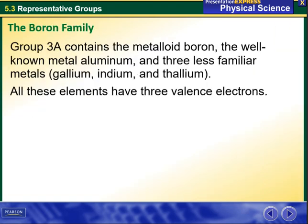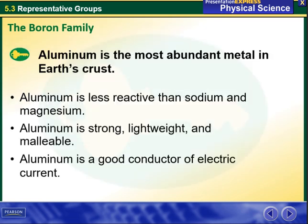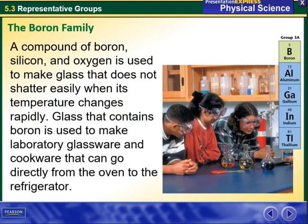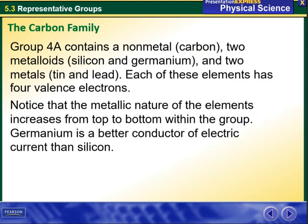Group 3A, the boron family, contains the metalloid boron, the well-known metal aluminum, and three less familiar metals: gallium, indium, and thallium. All these elements have three valence electrons. Aluminum is less reactive than sodium and magnesium; it is strong, lightweight, malleable, and a good conductor of electric current. A compound of boron, silicon, and oxygen is used to make glass that does not shatter easily when its temperature changes rapidly.